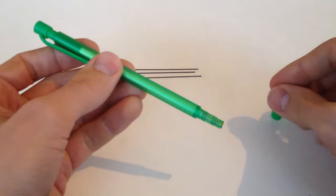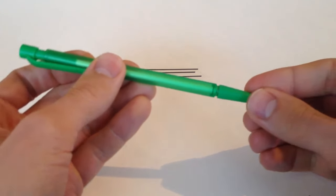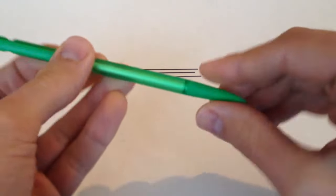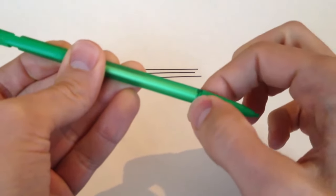Now, reinsert the writing tip by twisting it clockwise onto the threaded part of the body. Use the twist grips to secure the writing tip.